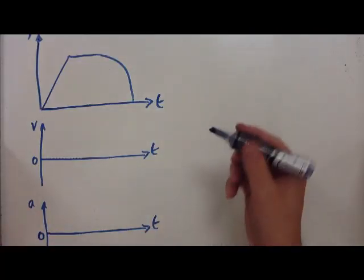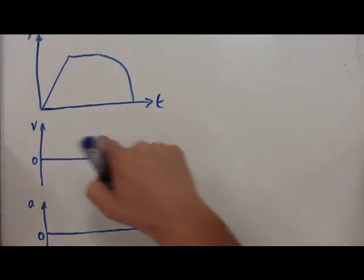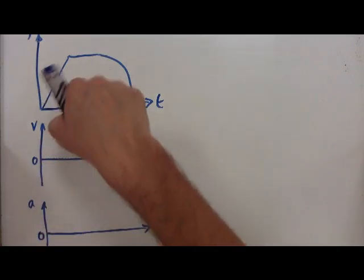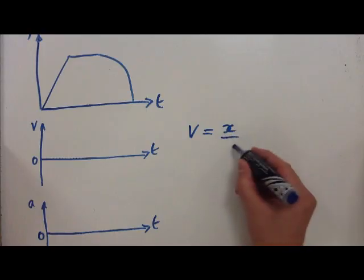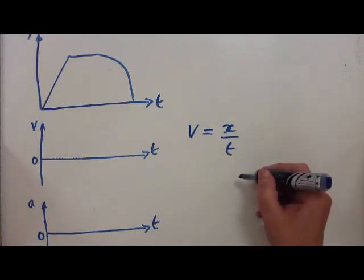Well, to do this what we need to always remember is that the relation between velocity, acceleration and displacement. We know the velocity is equal to x over t, distance divided by time.